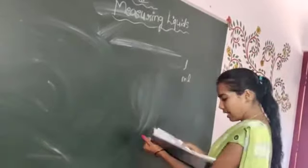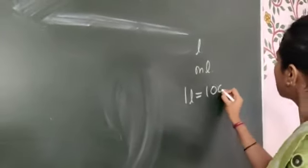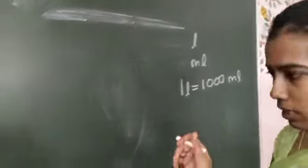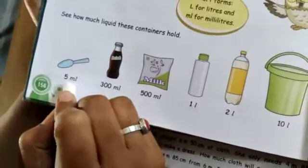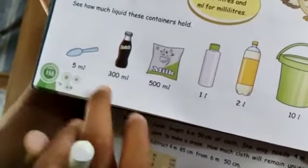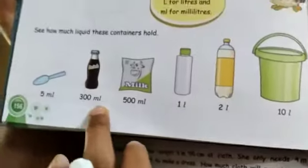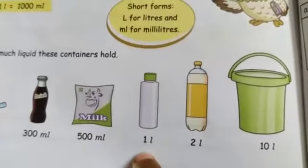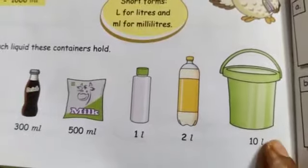See here, 1 liter is equal to 1000 milliliters. See here, one spoon will hold, it contains 5 ml. This drink, see here, cold drink has 300 ml. This milk packet having 500 ml. This bottle contains 1 liter, 2 liter. This bucket having 10 liters.